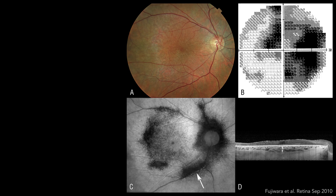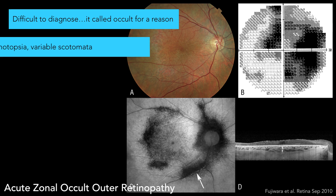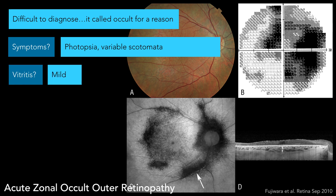Now we get to the really squirrely one to diagnose — this is AZOR. These pictures make it very obvious. I've got two patients I'm debating between autoimmune retinopathy and AZOR. The reason why they're still on the AIR side is because they have antibodies against their retinal antigens, but they could have AZOR because they have very similar findings. What's the definition? Acute loss of one or more zones of outer retinal function associated with photopsia, minimal fundoscopic changes, and abnormal ERG findings. Difficult to diagnose — it's called occult for a reason. Symptoms: photopsia, variable scotomata, vitritis is mild, CNV is not common. ERG findings: delayed 30 Hz flicker — reminds you of birdshot.